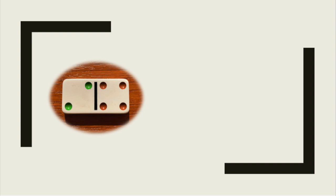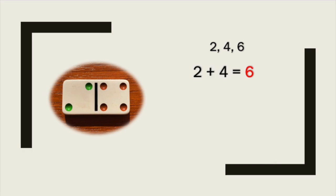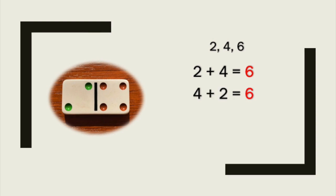Did you know that we can write four different number sentences just by looking at this one domino? Let's look. Let's remember the three numbers we saw on this domino: two, four, and six. We will only be using these three numbers to write all four of our number sentences. Our first number sentence can be two plus four equals six. I knew this by adding both sides of the domino together. Next I knew that if two plus four equals six then four plus two must also equal six because it's the turnaround fact.